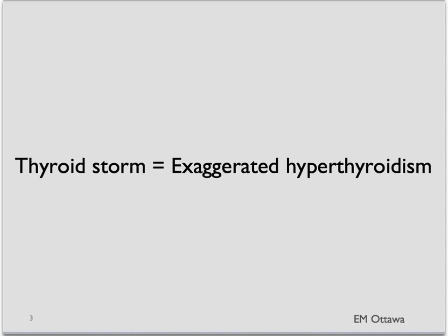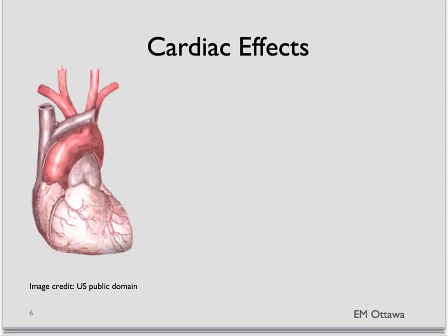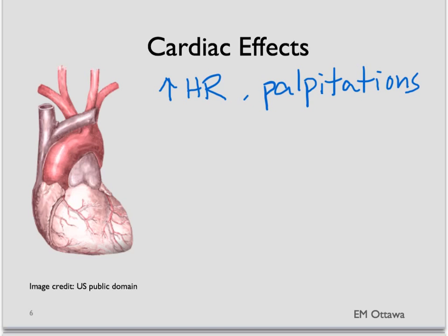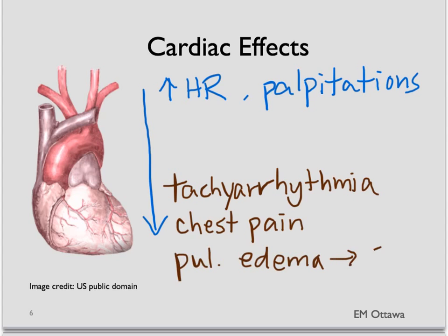What are those clinical features? They mainly affect three different parts of the body: the heart, the brain, and the GI tract. In the heart, in simple hyperthyroidism, there is tachycardia and palpitations. As the patient gets into thyroid storm, the symptoms become much worse. Now there are tachyarrhythmias, chest pain, and pulmonary edema, leading to shortness of breath.